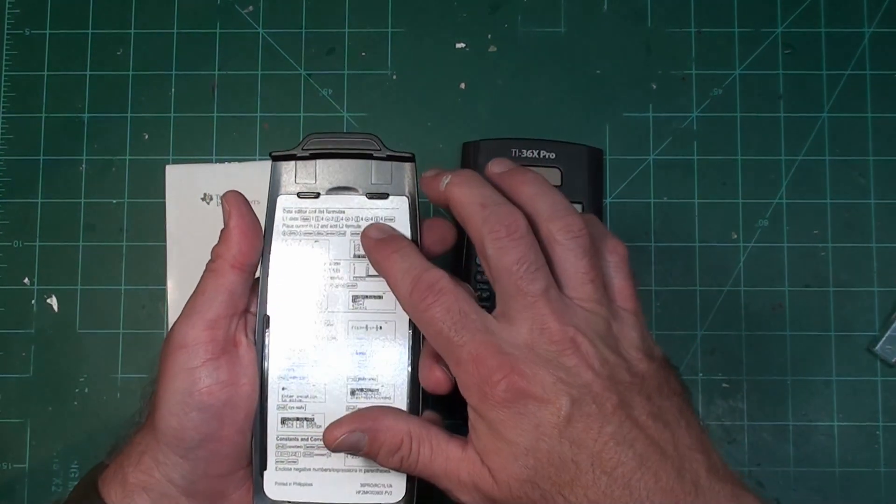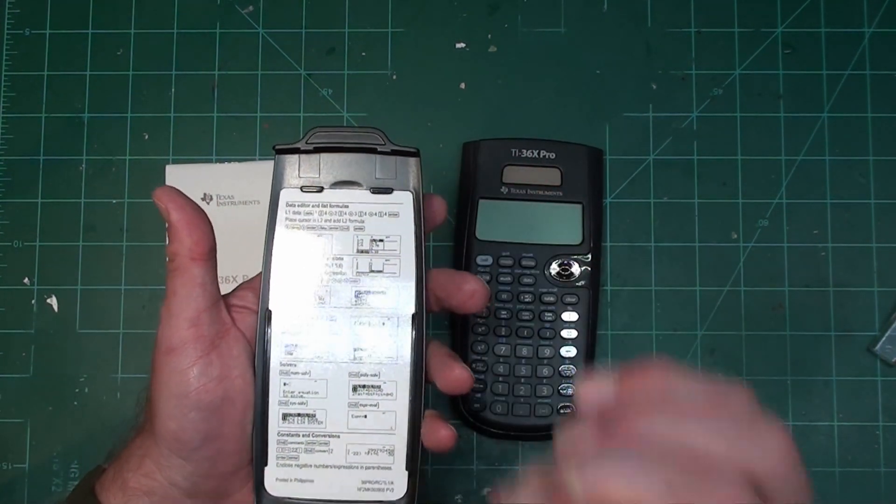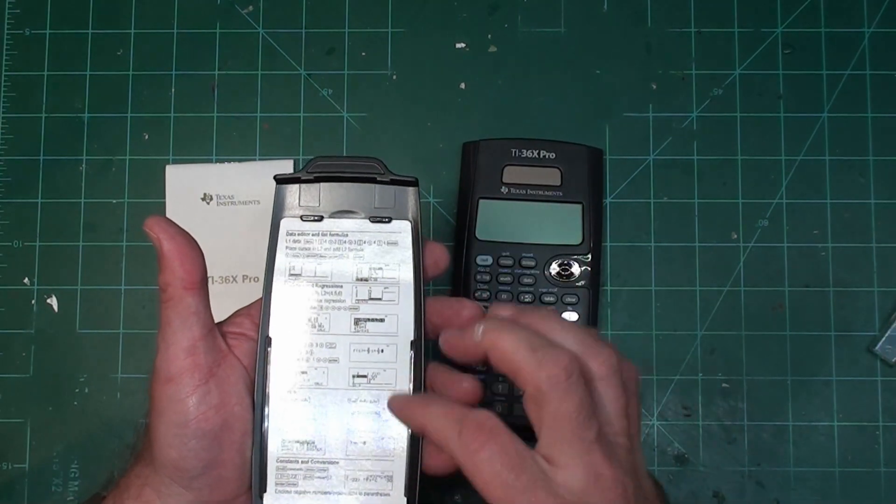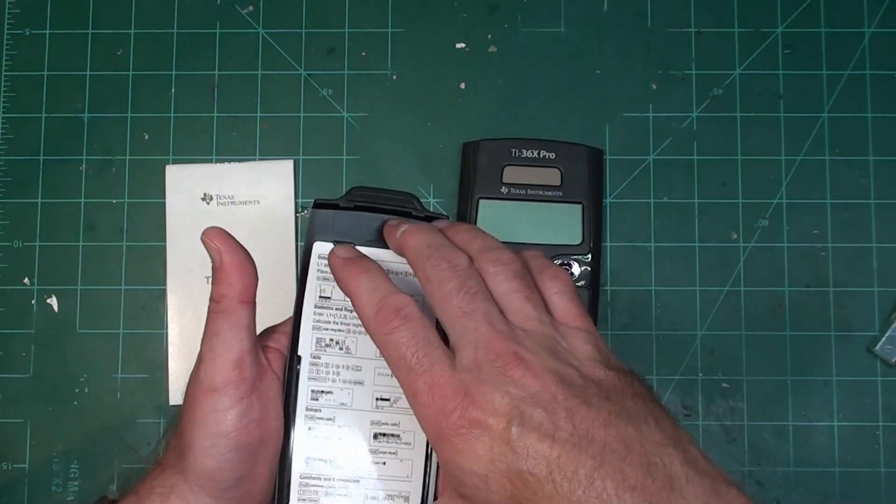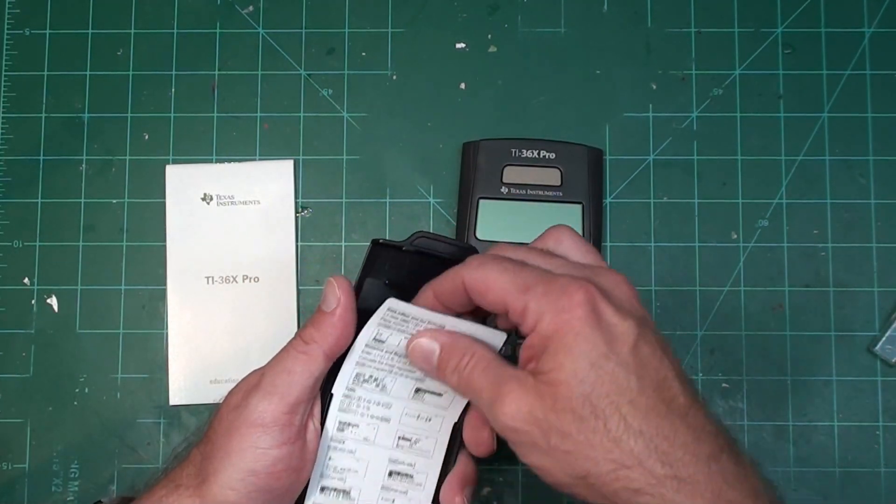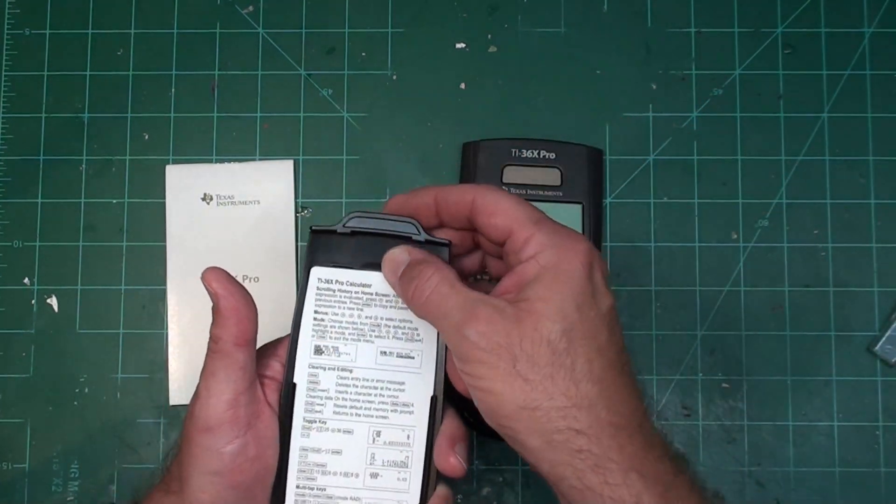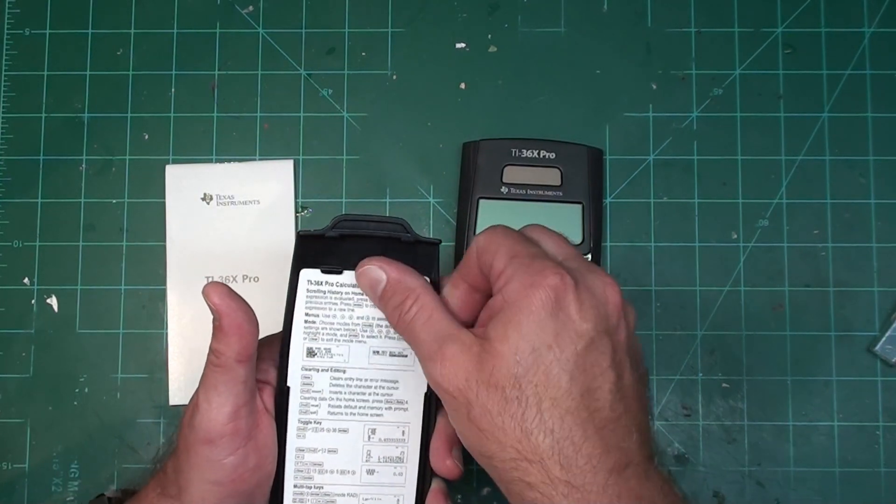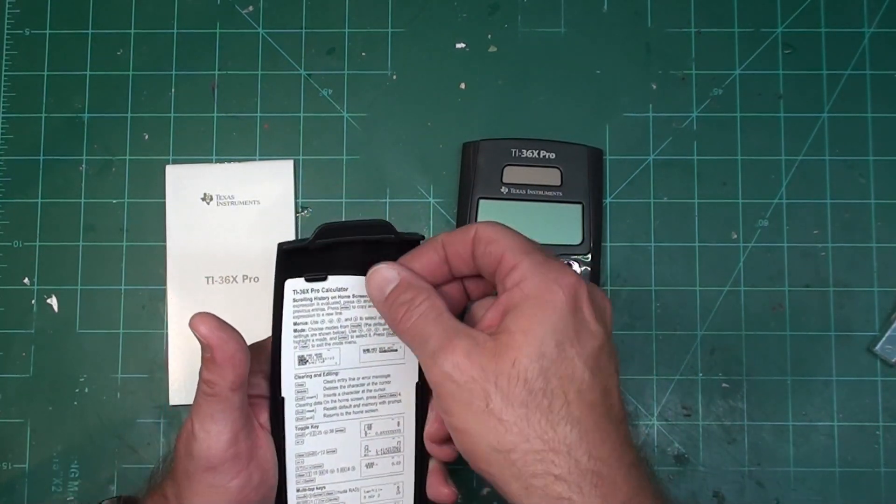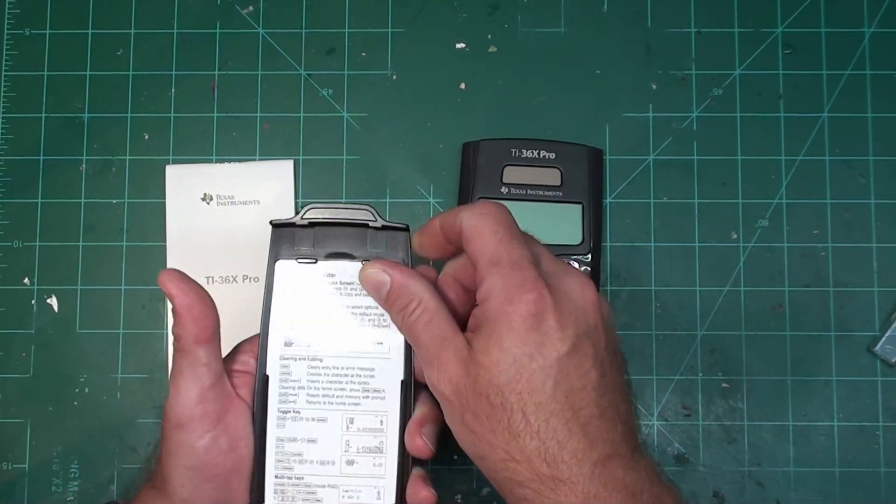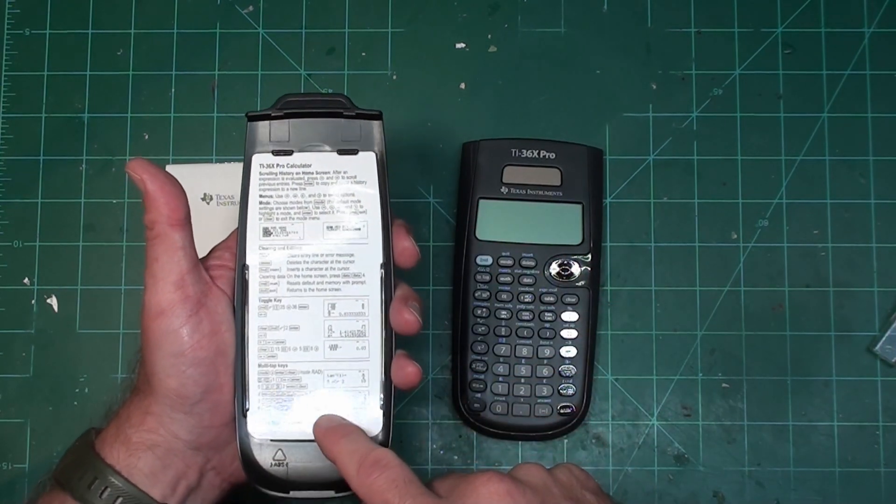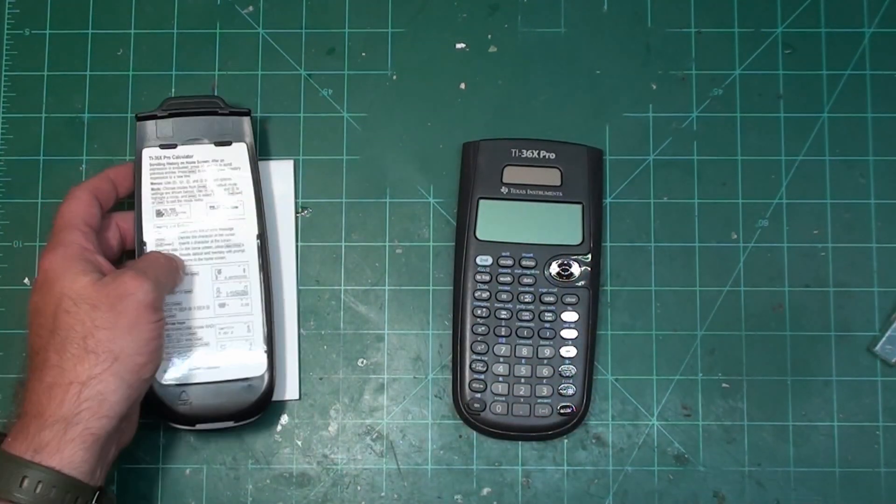The cheat card runs through data editor and list formulas. This is for statistics. It goes through how to do some other stuff. I'm going to go through all that in this series of videos. Won't be just one video on this calculator. And the other side is scrolling history, home screen, clearing and editing, toggle keys, multi-tap keys, all that fun stuff.